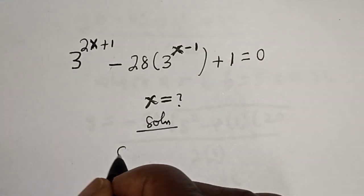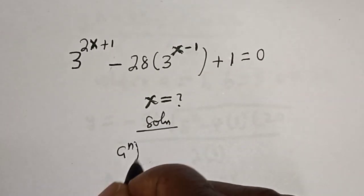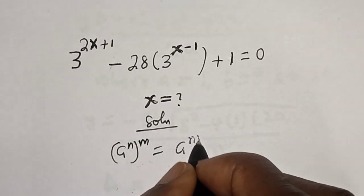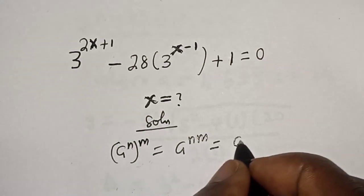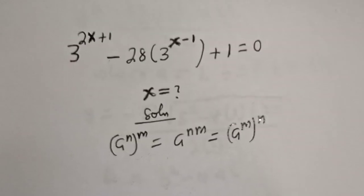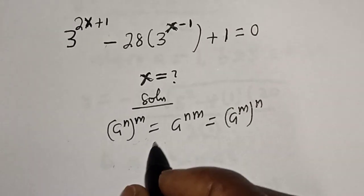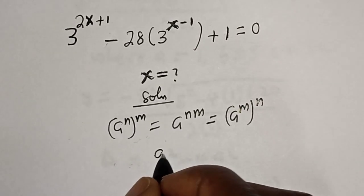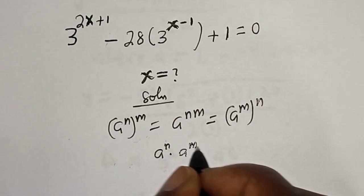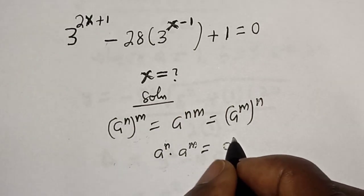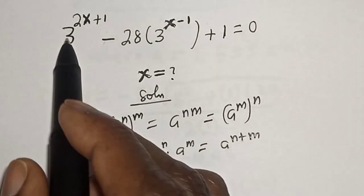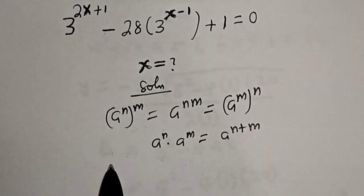Take note of this rule: a raised to power n to the power of m is equal to a raised to power nm, which is equal to a raised to power m to the power of n. And if you have a raised to power n multiplied by a raised to power m, this is equal to a raised to power n plus m. So 3 raised to power 2s+1 can be written as: